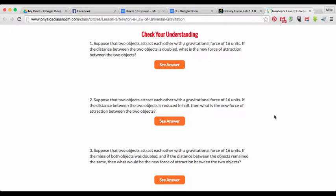So let's suppose that two objects attract each other with a gravitational force of 16 units. If the distance between the two objects is doubled, what is the new force of attraction between the two objects? So in this case, we know it's an inverse square relationship between distance and force. So doubling the distance will quarter the force. So 16 divided by 4 would be 4.